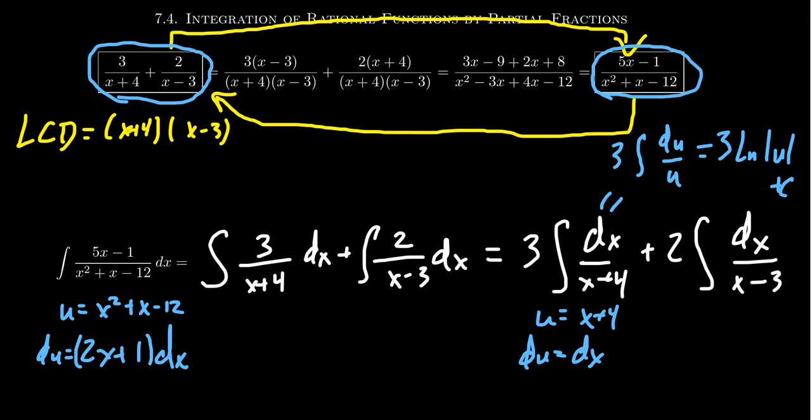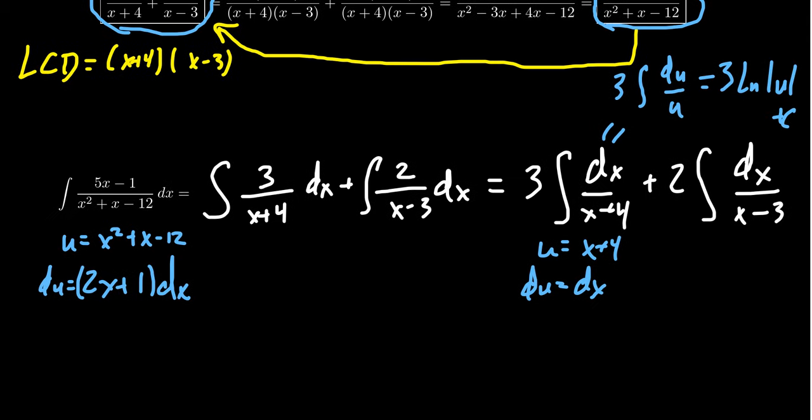Using this fact, the first integral gives us 3ln|x+4|. We need the absolute value because x+4 could be negative. The second integral gives 2ln|x-3| + C.